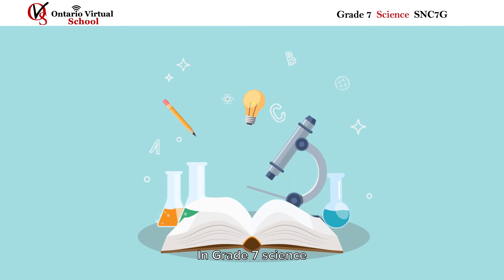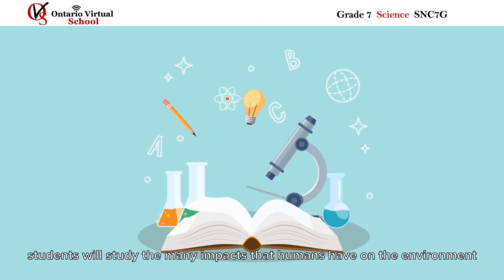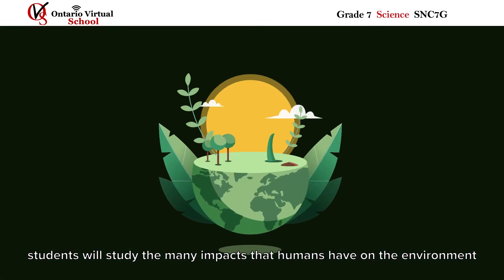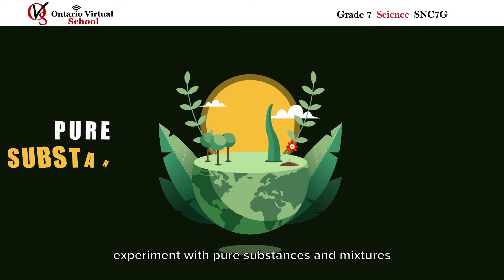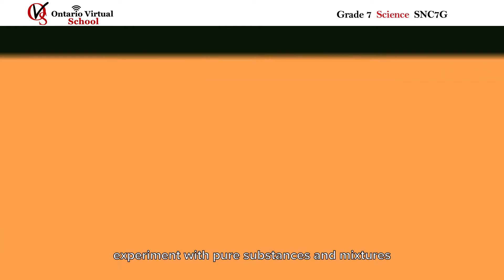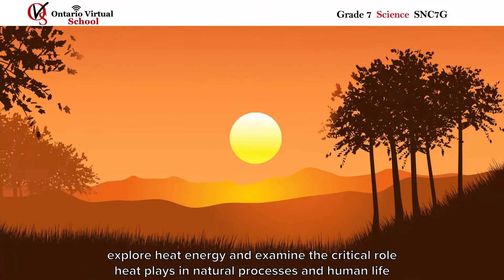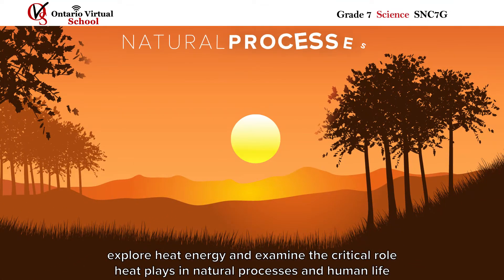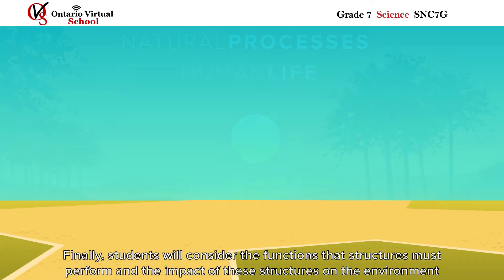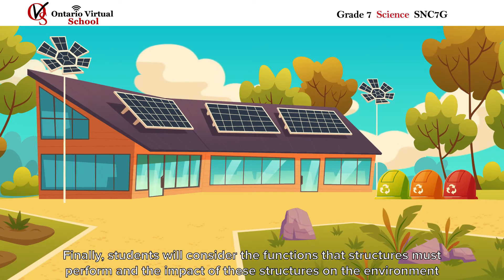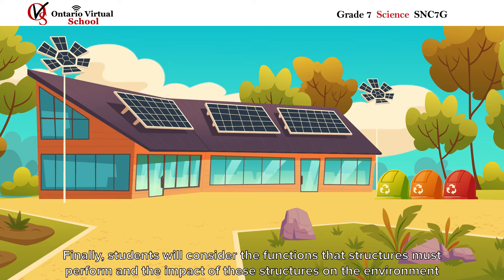In grade 7 science, students will study the many impacts that humans have on the environment, experiment with pure substances and mixtures, explore heat energy and examine the critical role heat plays in natural processes and human life. Finally, students will consider the functions that structures must perform and the impact of these structures on the environment.